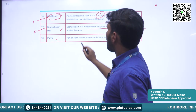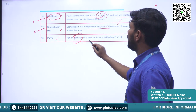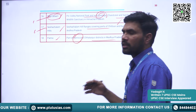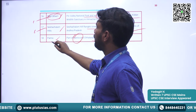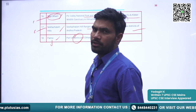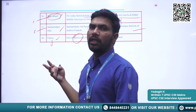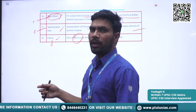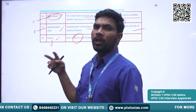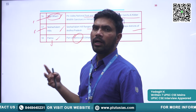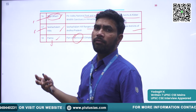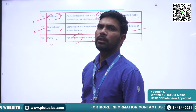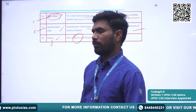Next is Panna — parts of Panna and Chhatarpur districts of Madhya Pradesh are designated as the Panna Biosphere Reserve. These are the 18 Biosphere Reserves designated by the Indian government, of which 12 are also under the protection of UNESCO and six are only under the protection of the Indian government.